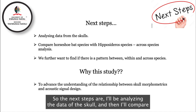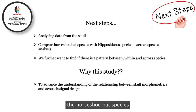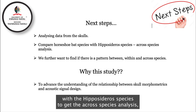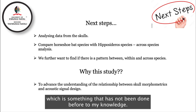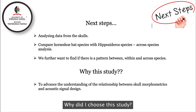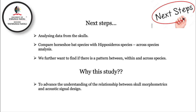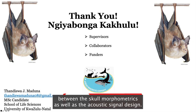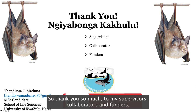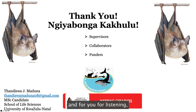The next steps are to analyze the skull data and then compare horseshoe bat species with hipposiderid species to get a cross-family acoustic analysis, which to my knowledge has not been done before. I chose this study because bats are wonderful, but more importantly I want to advance the understanding of the relationship between skull morphometrics and acoustic signal design. Thank you so much to my supervisors, collaborators, and funders, and to everyone who is listening.